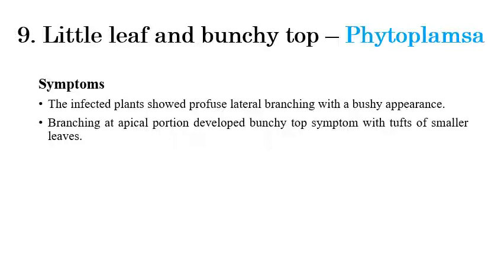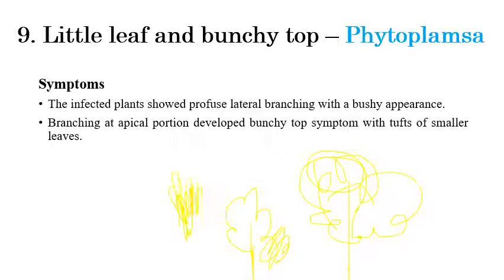Little leaf and Bunchy top is a phytoplasmal disease. Infected plants show profuse tillering and bushy branching. At the apical portion, bunchy top symptoms develop as tufts of smaller leaves, where a number of very small leaves are formed together in the same area, giving a bunchy appearance.